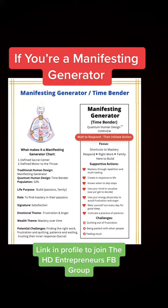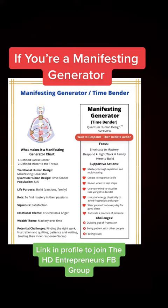In traditional human design, the name of this type is manifesting generator. In quantum human design, it's a time bender. Your life purpose is to build, follow your passions, and be here for friends, family, and community. Your role is to find mastery in your passions.